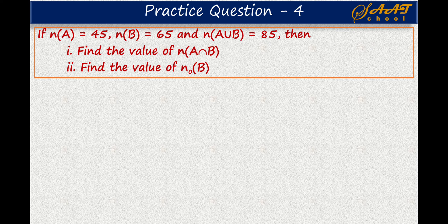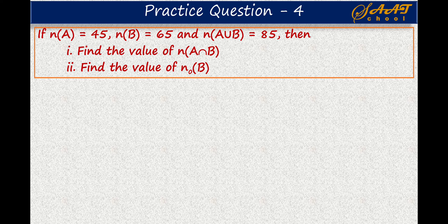Here is a practice question. N(A) = 45, N(B) = 65, and N(A ∪ B) = 85. The question is to find the value of N(A ∩ B) and N(only B). I hope you can find these solutions using the relationships we discussed. Thanks for watching. If you like the video, don't forget to subscribe, and of course do like and share the video. I will meet you in the next video. Take care.